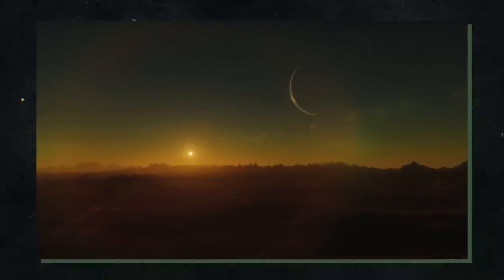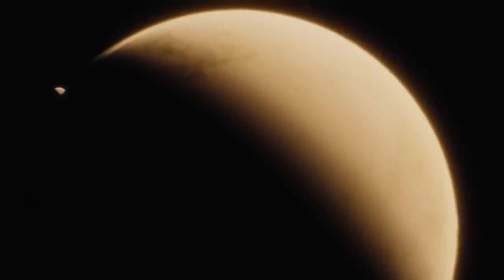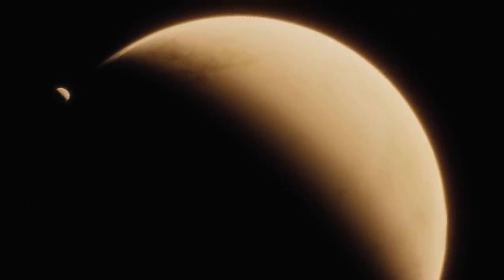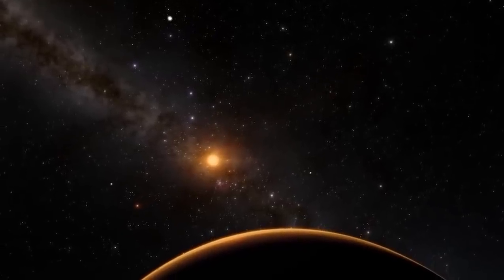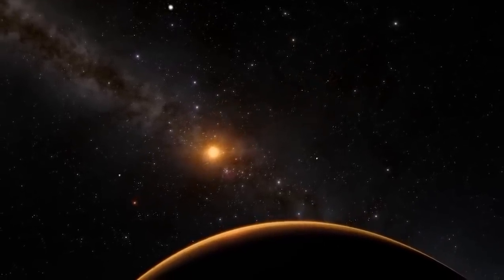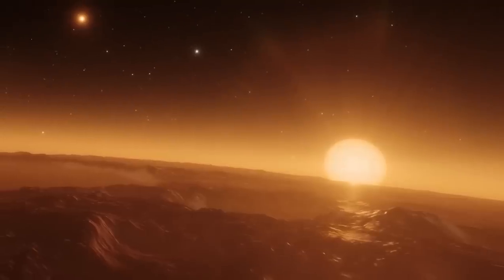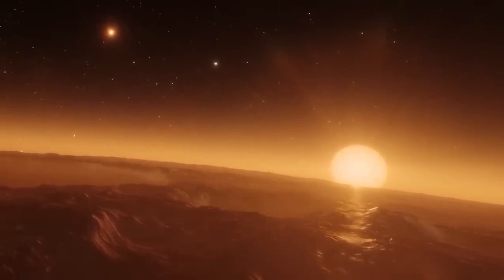For instance, TRAPPIST-1b, the nearest planet, completes an orbit around its star every 1.9 days. That year was incredibly brief. A year on the furthest planet, TRAPPIST-1h, lasts around 19 days.